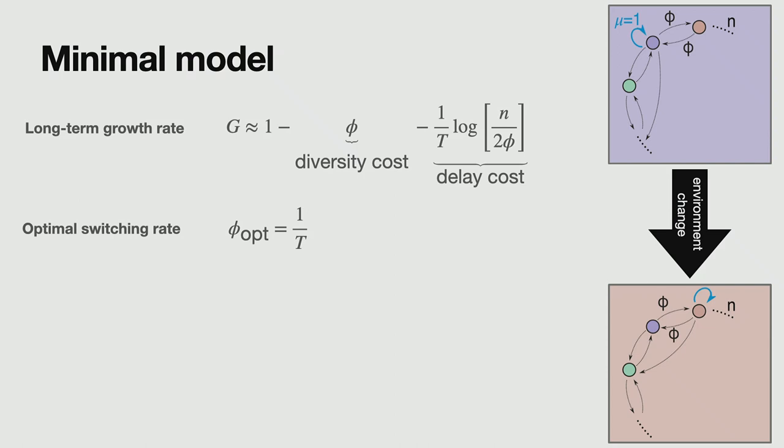But this has a deep relation with optimal portfolio theory, or betting on horse races. You want to bet on the strategy in proportion to the probability that this strategy is going to be successful. And this 1 over T is the probability that you're going to switch environments. So that's why this comes out. And then the long-term growth rate is also a beautiful formula. It has just a maximum growth rate you could possibly have, one as an upper limit, and then two cost terms.